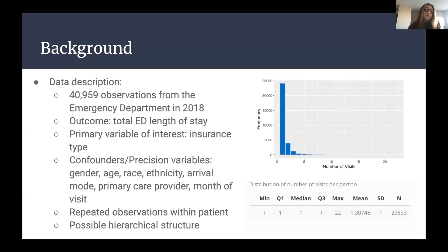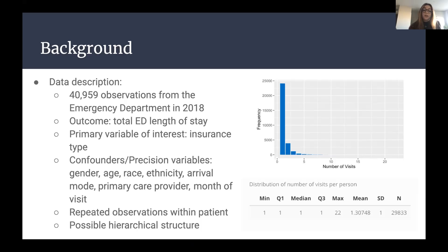Other variables included gender, age, race, ethnicity, arrival mode — which served as a surrogate for severity of symptoms, since it captured whether patients arrived by EMS — whether patients had a primary care provider, and month of visit. A PI had previously noted that some months are busier than others, which might explain longer stays in certain months. Many patients had repeated observations — some came into the ED up to 22 times in one year. There were about 30,000 unique patients out of 41,000 total observations.